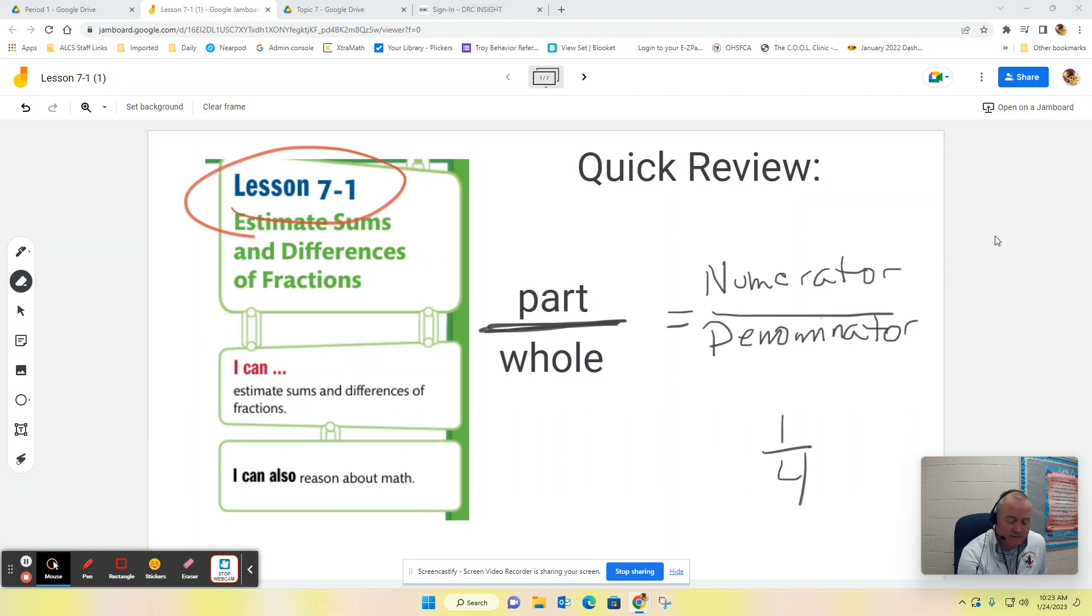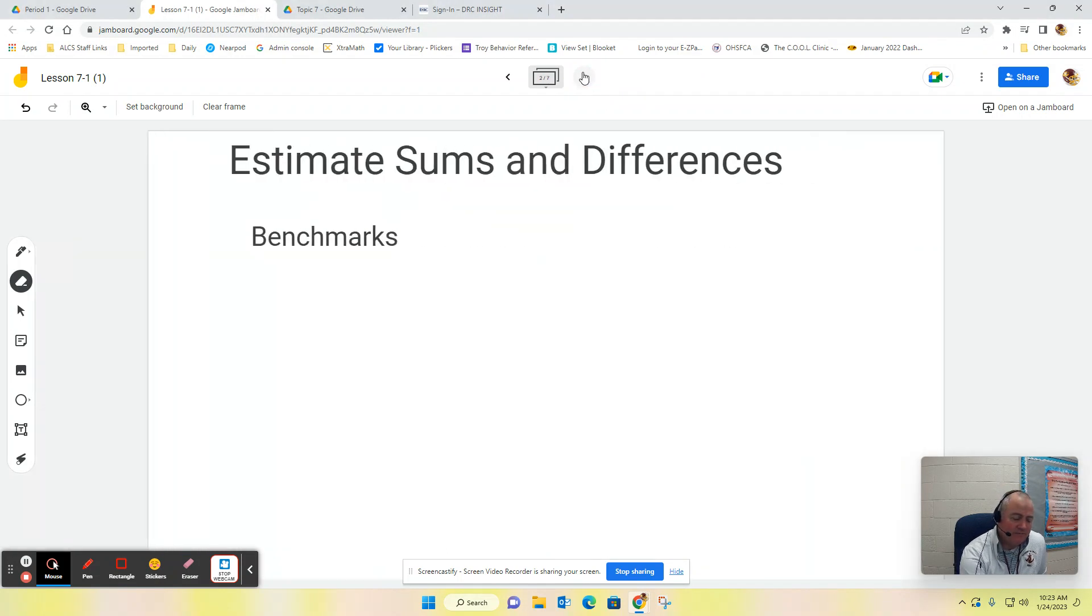Just as a quick example, if I've got a pizza, because who doesn't like pizza, and I cut that pizza up into four slices, and I eat one of those four, I have eaten one part out of a total of four slices. One-fourth. That is my part over my whole. So without further ado, let's get into today's lesson on estimating sums and differences.